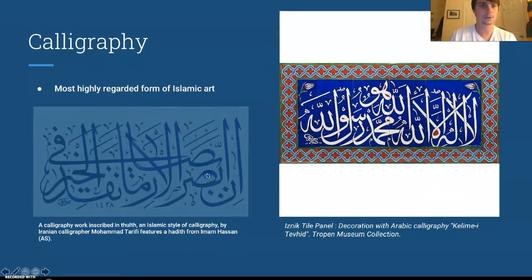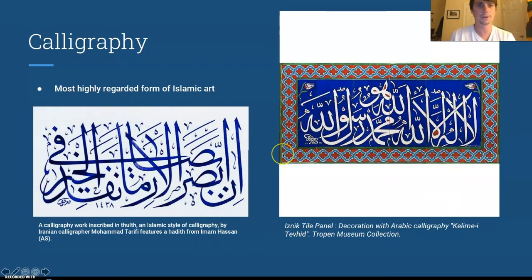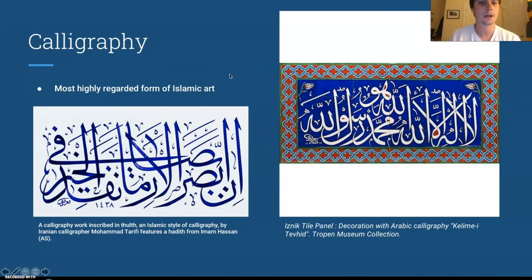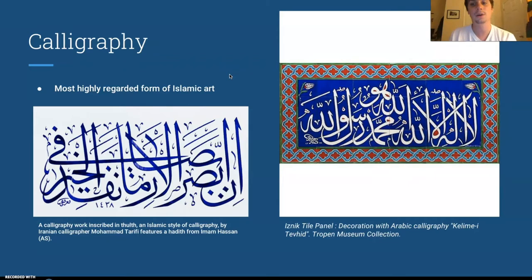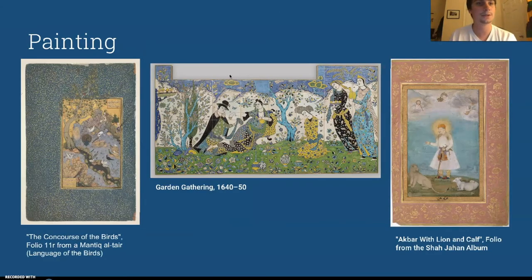Here are some examples of calligraphy. Calligraphy is the most highly regarded form of Islamic art because it is the most difficult. You can see calligraphy work inscribed in Thuluth script. Next, there is a tile with calligraphy on it, which is also an art form in itself.